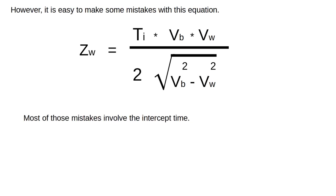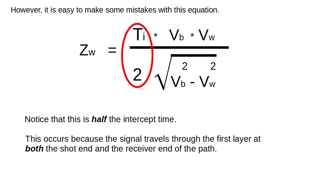However, it is easy to make some mistakes with this equation. Most of those mistakes involve the intercept time. Notice that the equation uses half the intercept time. This occurs because the signal travels through the first layer at both the shot end and the receiver end of the path.